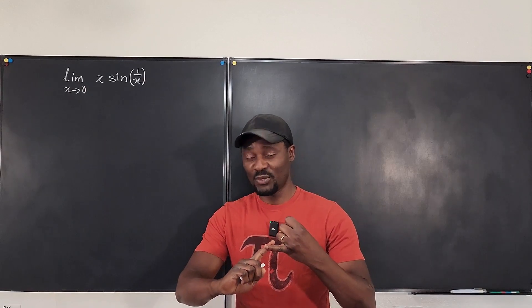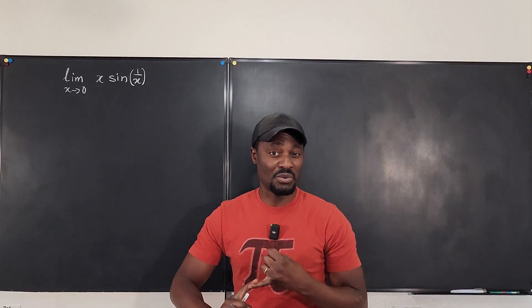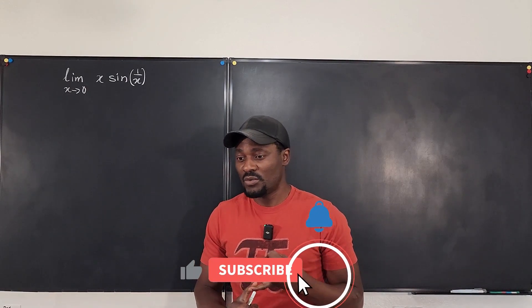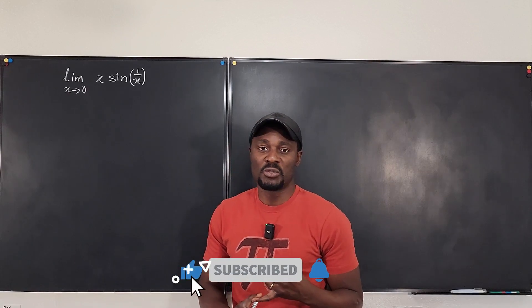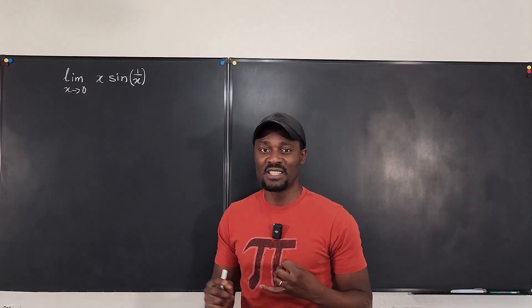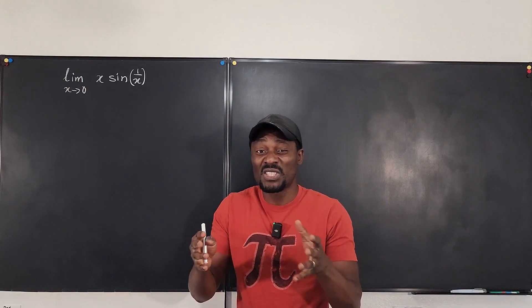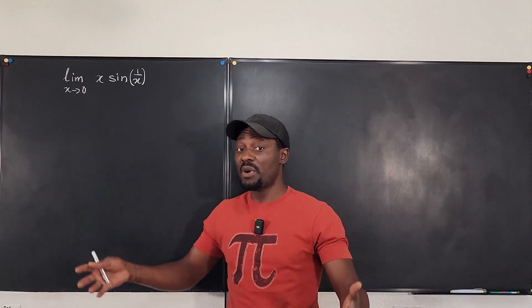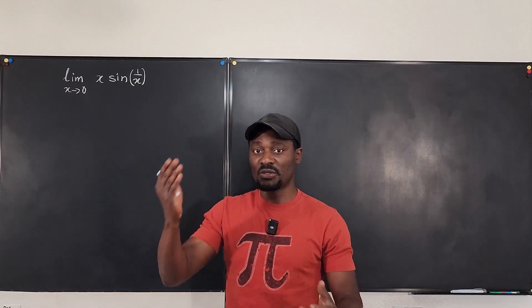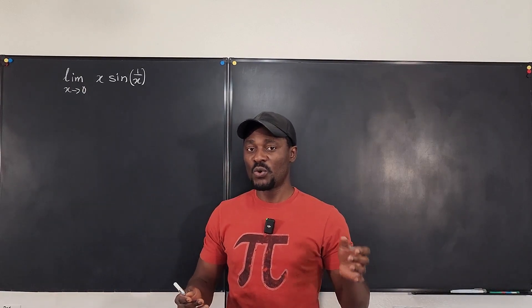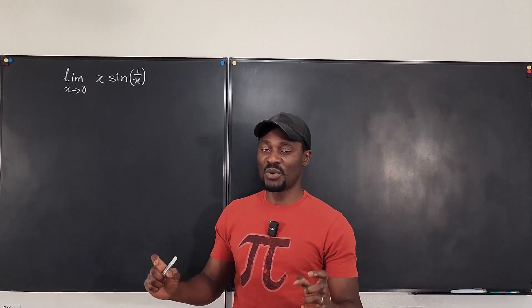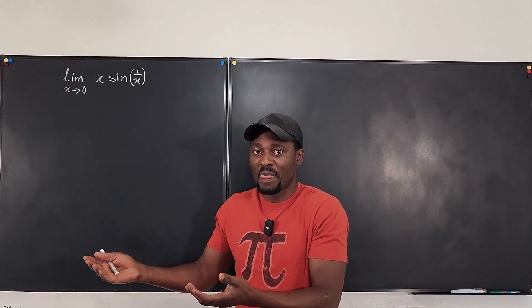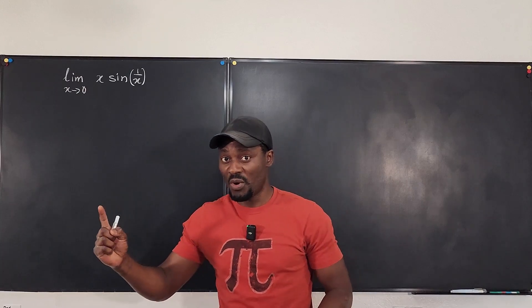The first method is what you call algebraic simplification, or it could also involve trig identities. When you simplify the expression, you might be able to cancel something out, or you use one of those trig identities that we have, and you just solve it.